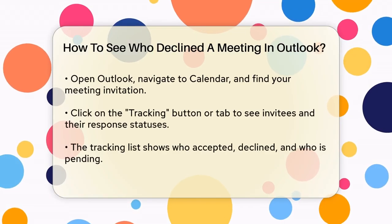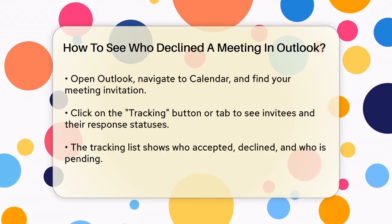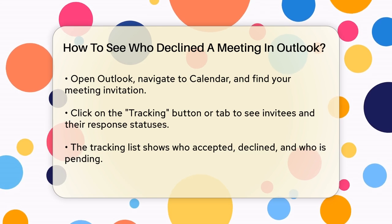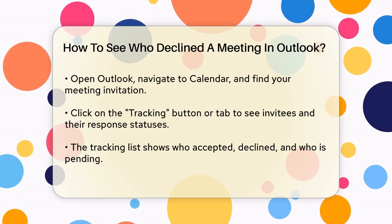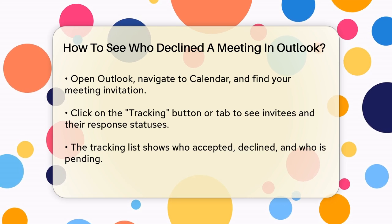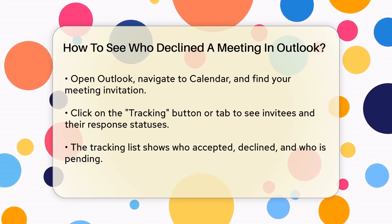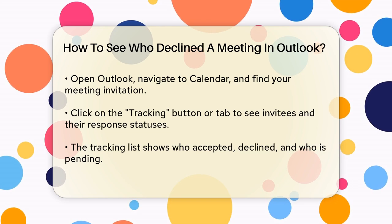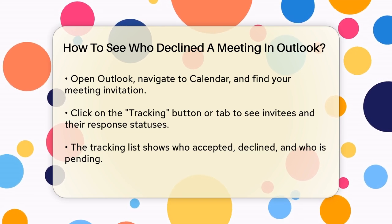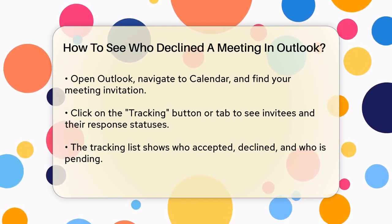Here's how you can do it. Open your Outlook and navigate to the calendar view. Find the meeting invitation you sent and open it. Once open, look for the tracking button or tab. Click on it and you'll see a list of all the invitees along with their response status. This includes who accepted, who declined, and who is still pending.